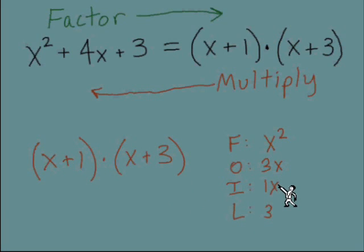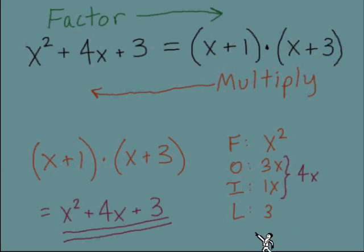Last is 3. We have like terms, the 3x with the 1x. So we'll combine those like terms and get 4x. And we definitely are coming up with that trinomial x squared plus 4x plus 3.